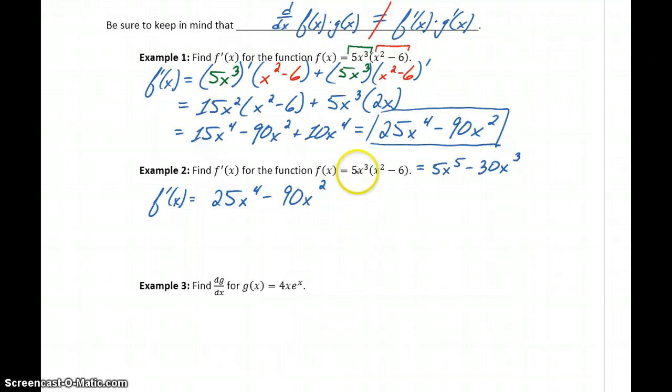And the reason is that in example two, well example one and two, we had a function where we could distribute, we could rewrite that to match some of our earlier properties. So in that case we could use a less complicated approach, but what we're going to see in example three is a function that we don't have the option of rewriting. There's no way to distribute anything through with 4x e to the x. There's no way to manipulate this expression to match an earlier property, meaning the product rule is going to be our only alternative.